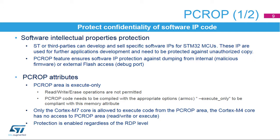The protected firmware can only be executed by the Cortex-M7 core. Any other access — DMA, debug, and data read, write, and erase — is strictly prohibited. The Cortex-M4 core can never access the protected area, even for code execution. To be compliant with this constraint, the firmware must be compiled with appropriate compilation options — for example, -execute_only for Keil tools.